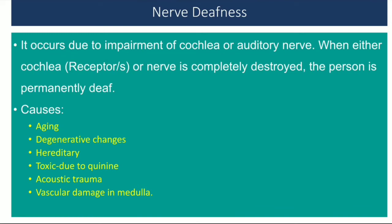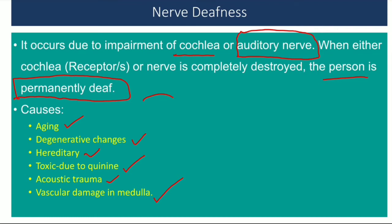Nerve deafness occurs due to impairment of the cochlea or auditory nerve — that is why it is also called sensorineural deafness. In this case, the person is permanently deaf. Causes include aging and degenerative changes, hereditary factors, drug toxicity from quinine and aminoglycoside antibiotics, acoustic trauma, and vascular damage in the medulla.